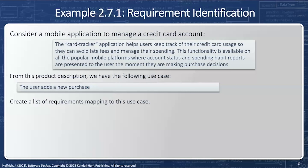Let's take a look at how the noun identification process works. We're going to have a mobile application to manage a credit card account. The credit card tracker application helps users keep track of their credit card usage so they can avoid late fees and manage their spending. This functionality is available on all popular mobile platforms where account status and spending habit reports are presented to the user the moment they are making purchase decisions.